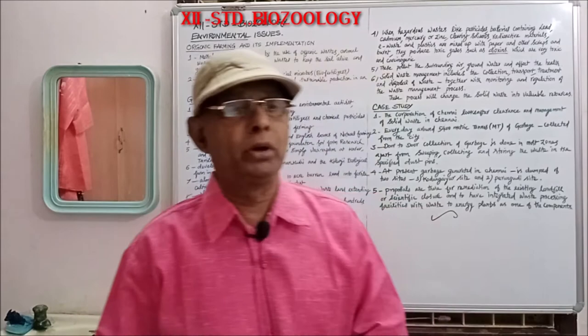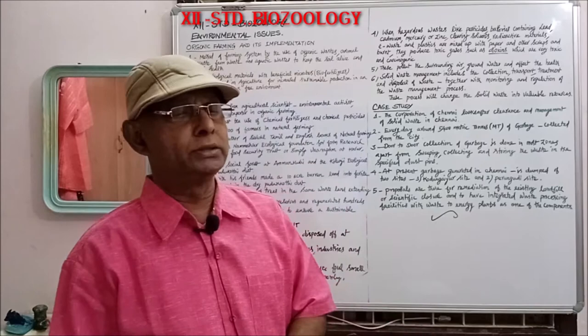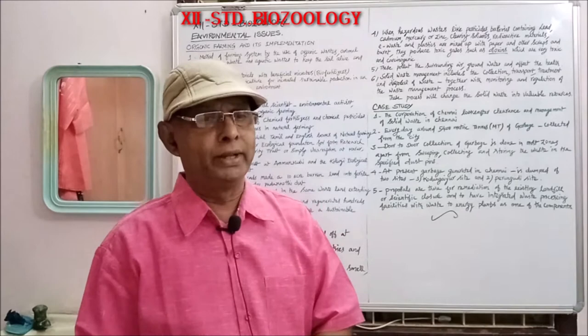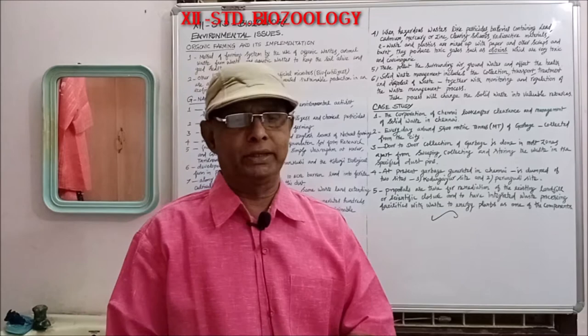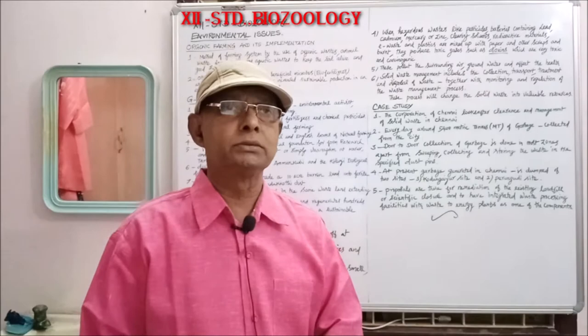Hello my dear students, today we are going to see about organic farming and its implementation in environmental issues. Organic farming is a method of farming system by the use of organic waste — crop waste, animal waste, farm waste and aquatic waste — to keep the soil alive and in good health, that means it will maintain the soil fertility.